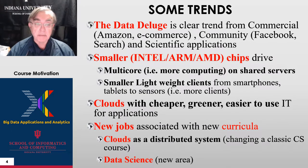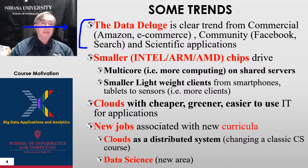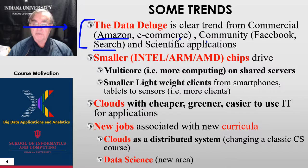Here are some trends. Big data is the data deluge — data is pouring down. We have 1.8 billion photos uploaded every day into the cloud from Facebook, Snapchat, and so on. We have search, Amazon, Netflix, and scientific applications like the Large Hadron Collider with 15 petabytes a year. So that's the data deluge.